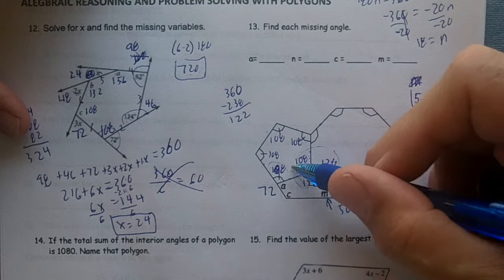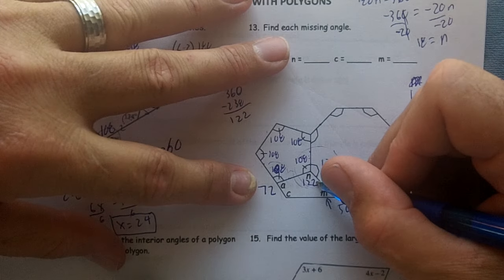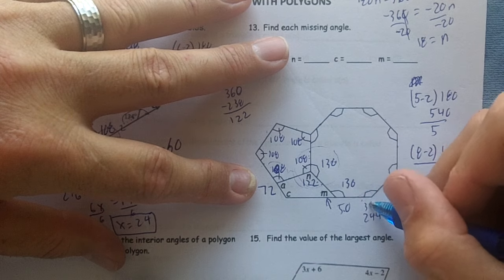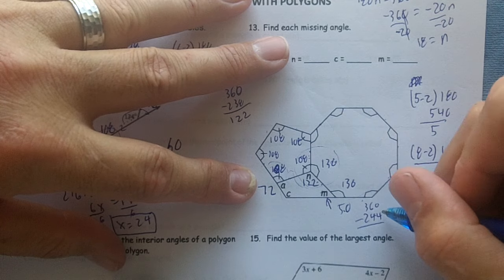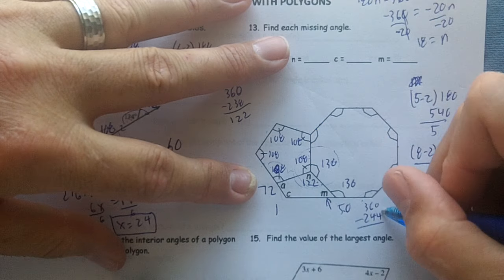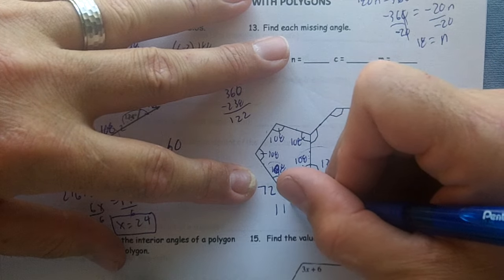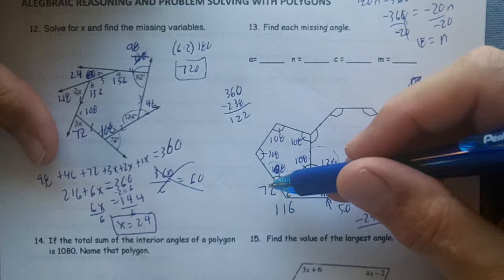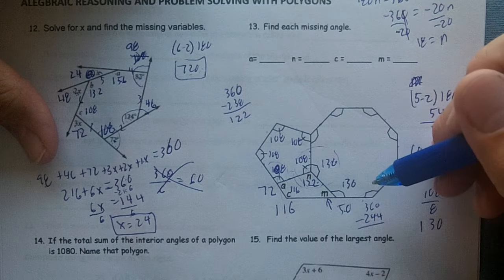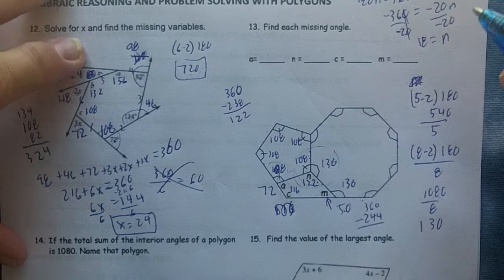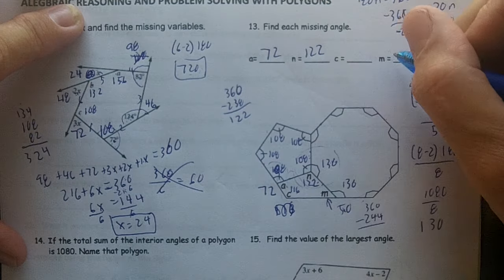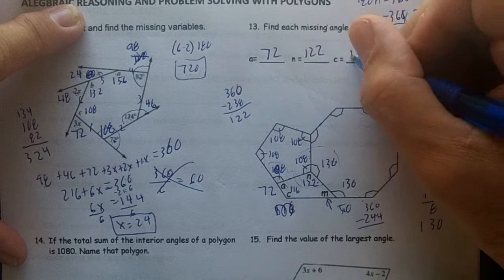And then these four have to add up to 360. So 72 and 22 is 194, 244. 360 minus 244 is 116. So 116 is C. So if I add up 72, 116, 50, and 122, I'll get 360. So A is going to be 72, N is going to be 122, M is going to be 50, and C is going to be 116.